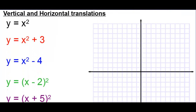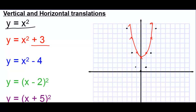Let's graph y equals x squared. We have points at (0,0), (1,1), (2,4), and (3,9), and the same thing on the other side. Now we want to graph y equals x squared plus 3. We have to take all of these and bump them up 3. Plus 3 on the outside means we're going to move up 3. So this parabola moves up 3 spaces.